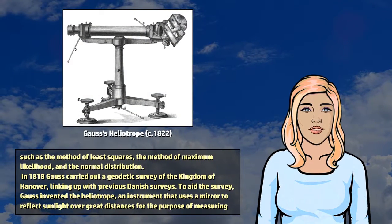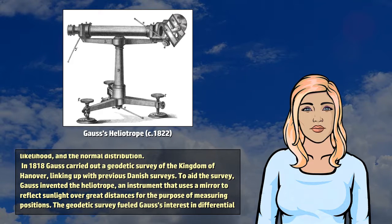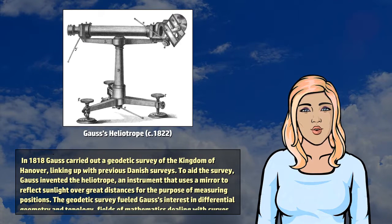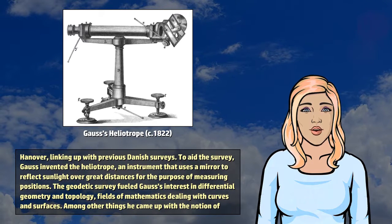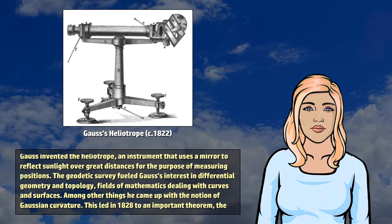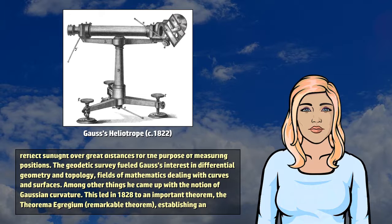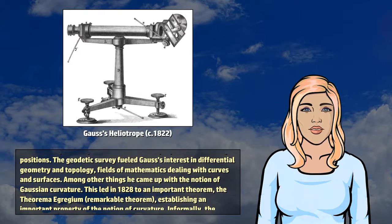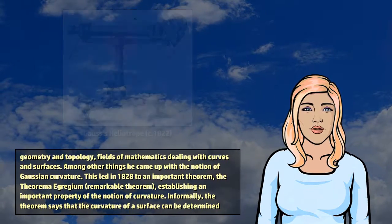In 1818 Gauss carried out a geodetic survey of the Kingdom of Hanover, linking up with previous Danish surveys. To aid the survey, Gauss invented the heliotrope, an instrument that uses a mirror to reflect sunlight over great distances for the purpose of measuring positions. The geodetic survey fueled Gauss's interest in differential geometry and topology, fields of mathematics dealing with curves and surfaces. Among other things he came up with the notion of Gaussian curvature.